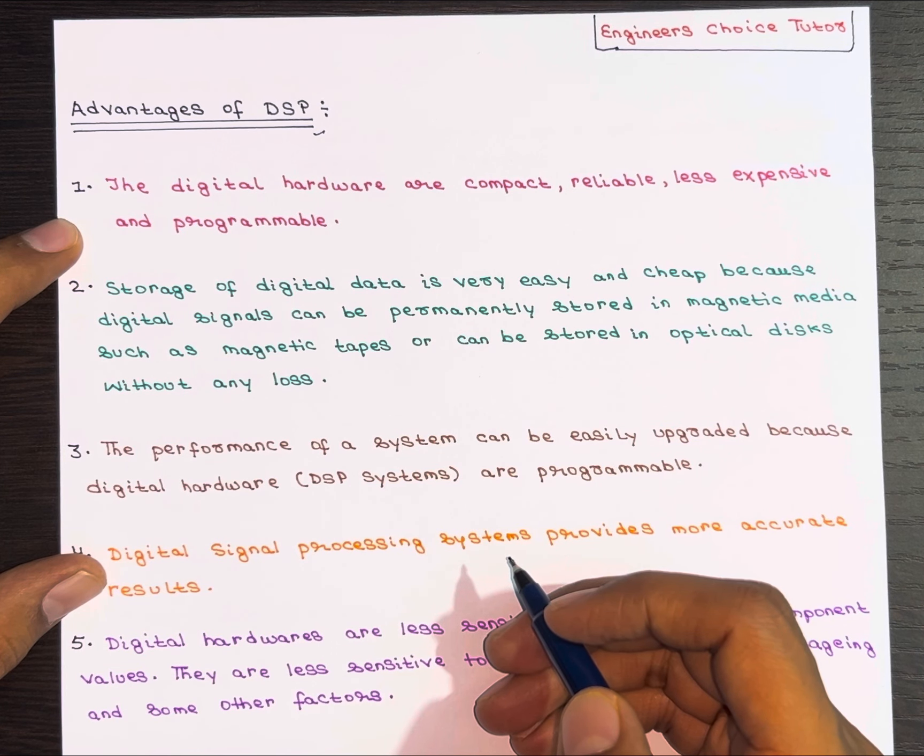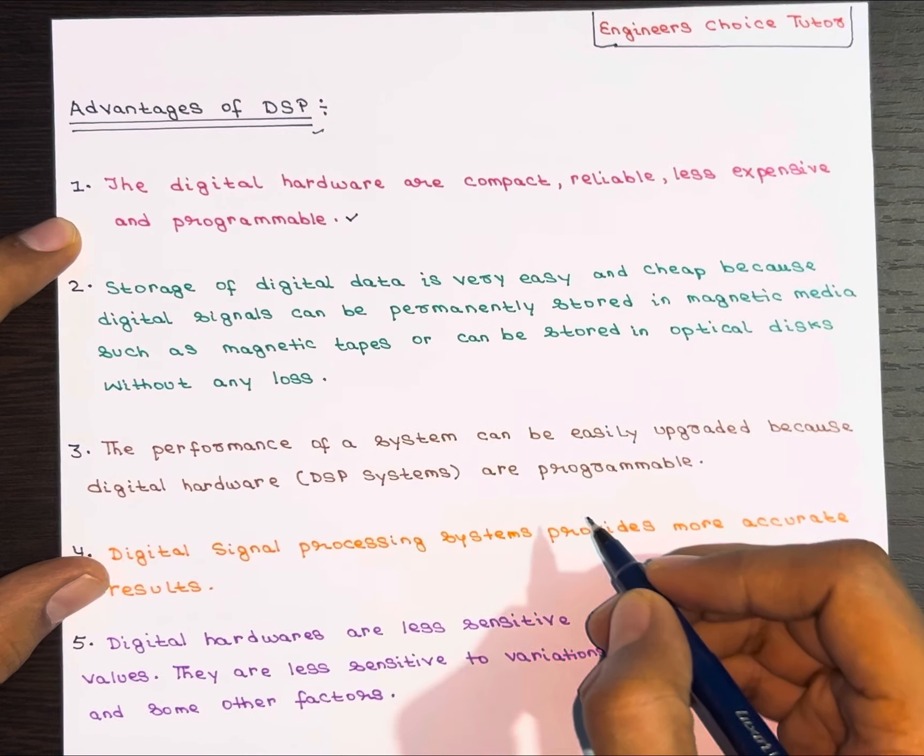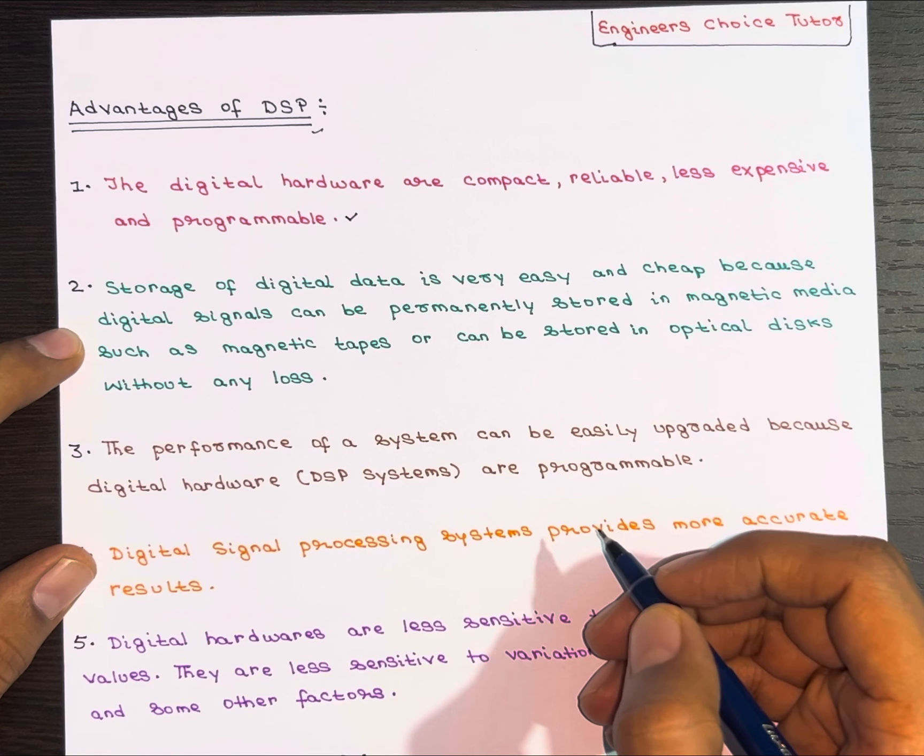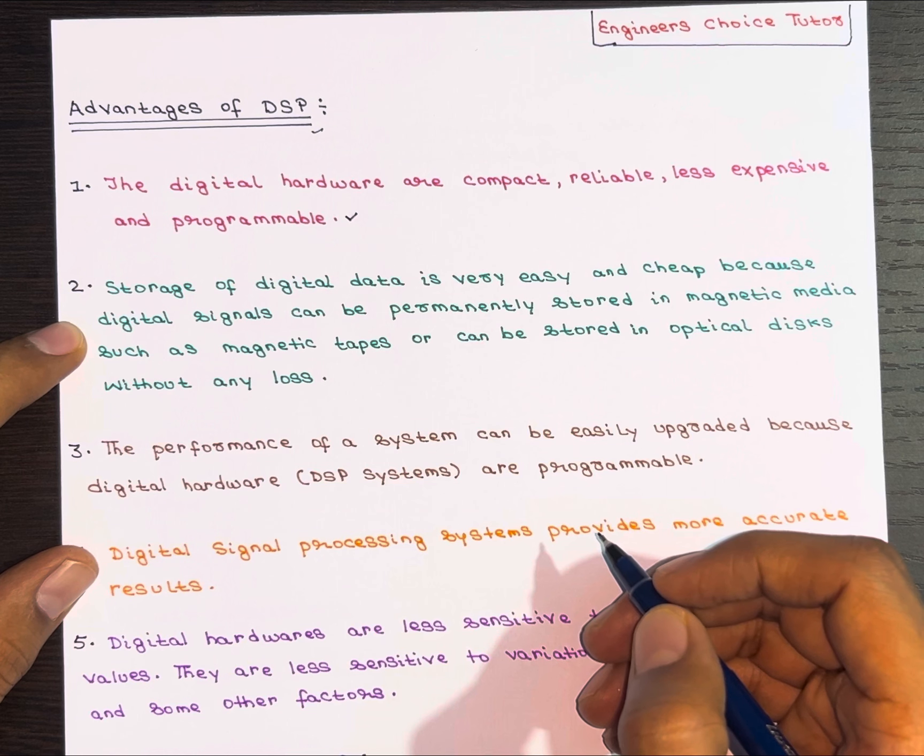Let's start with the advantages of DSP. First advantage: the digital hardware is compact, reliable, less expensive and programmable, which means it can be customized to suit different needs.